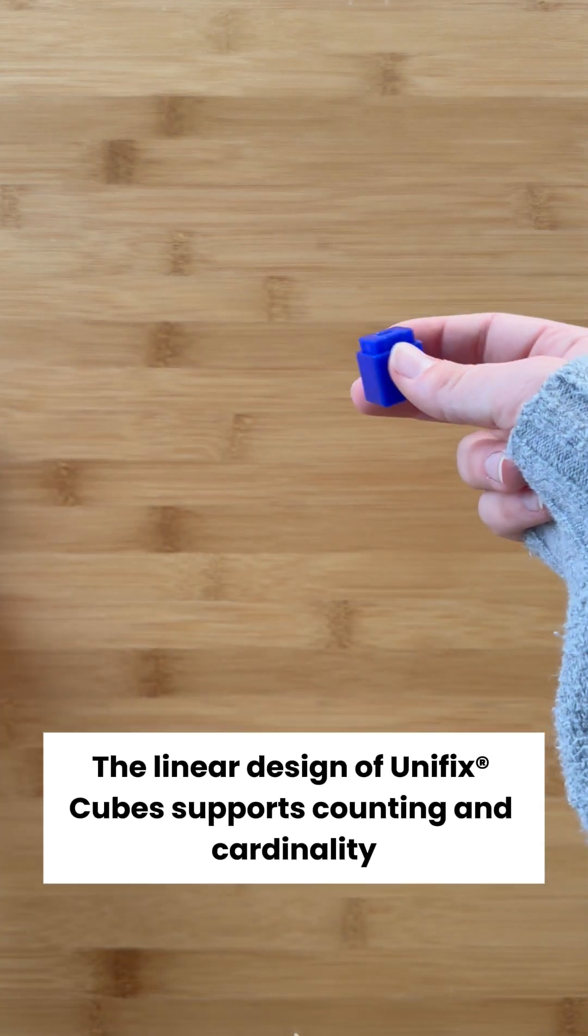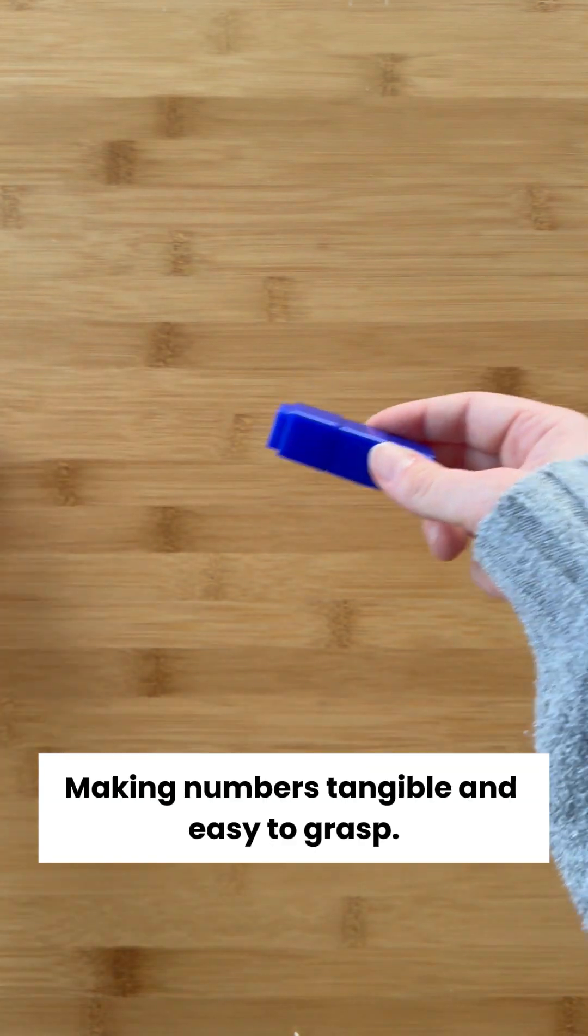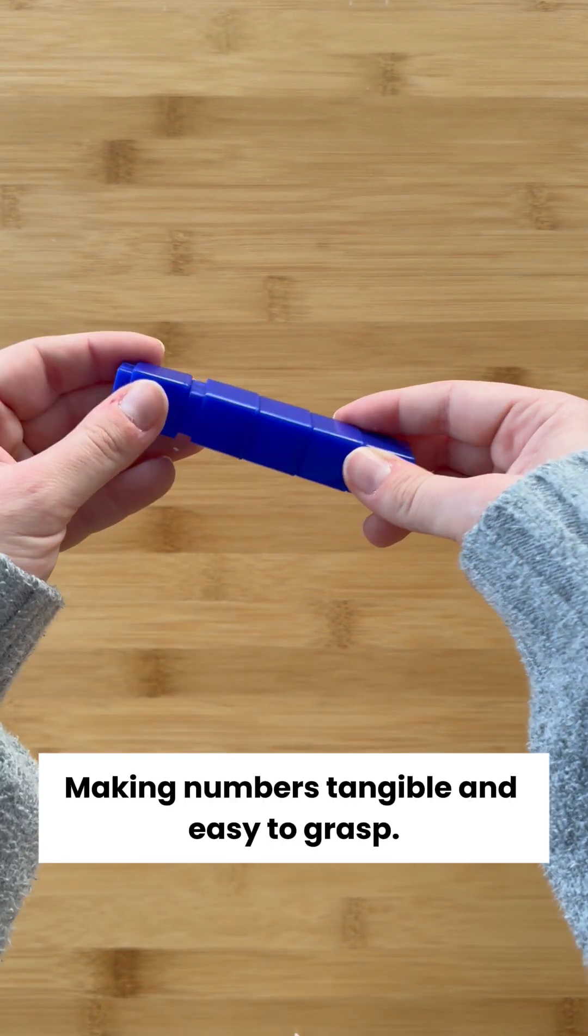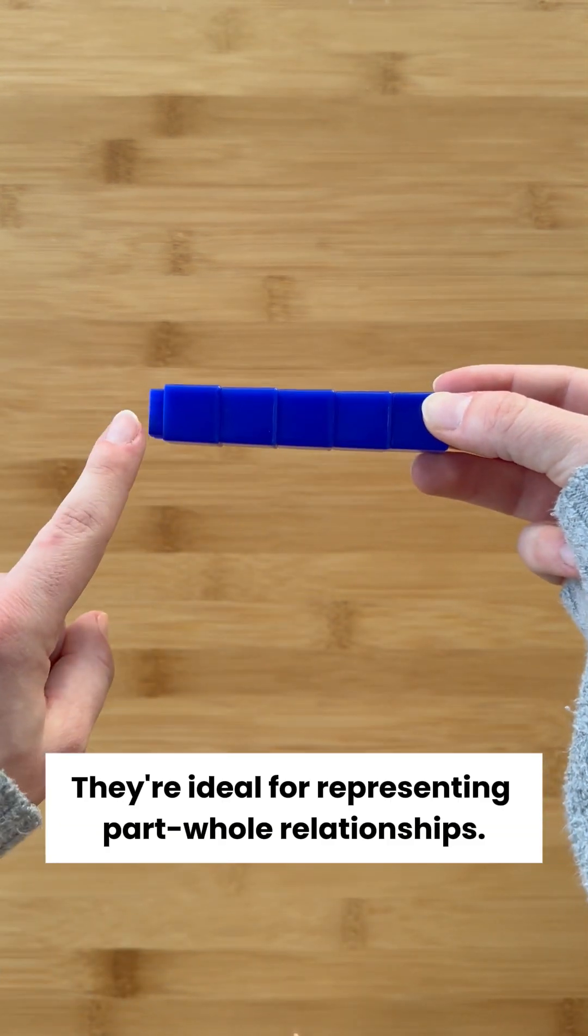The linear design of Unifix Cubes supports counting and cardinality, making numbers tangible and easy to grasp. They're ideal for representing part-whole relationships.